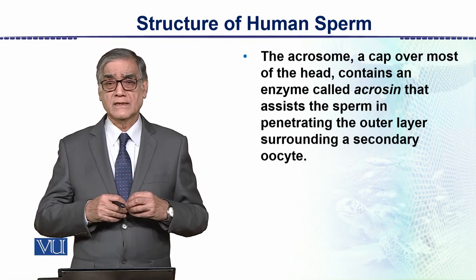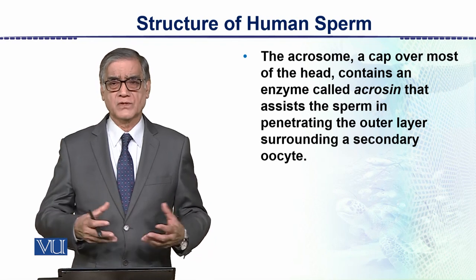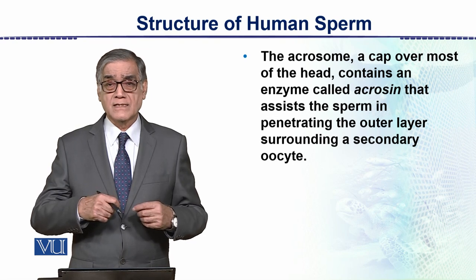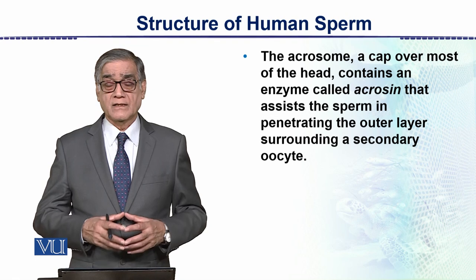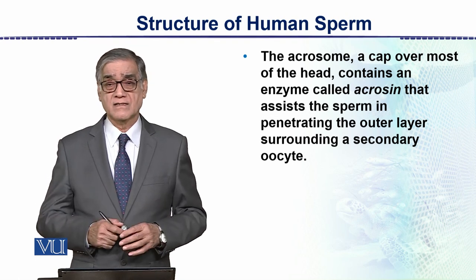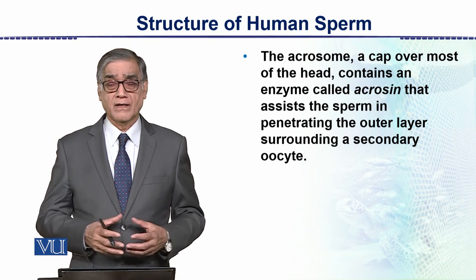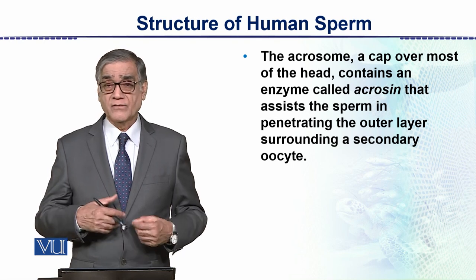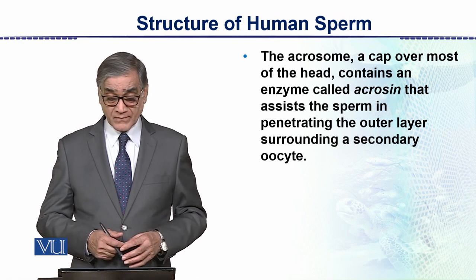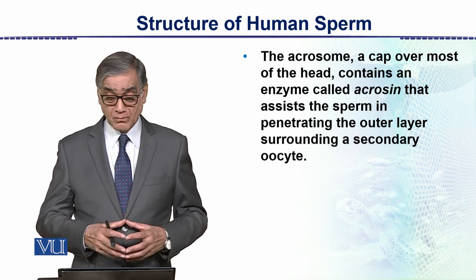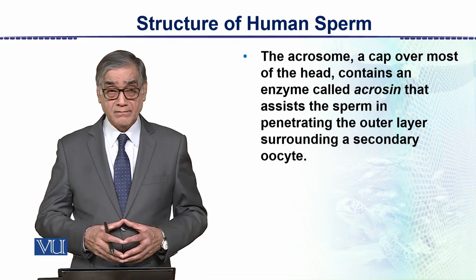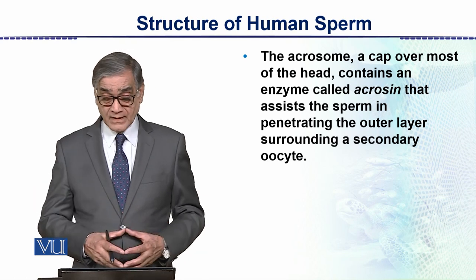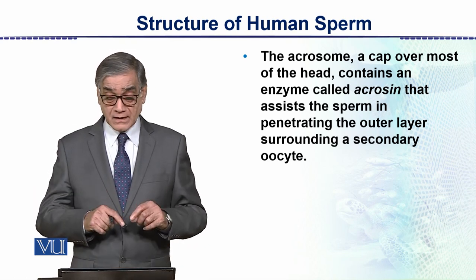The acrosome contains enzymes. When the sperm comes in contact with the secondary oocyte, these enzymes are released and form a hole, through which the head containing the haploid nucleus moves into the egg, completing the fertilization process.